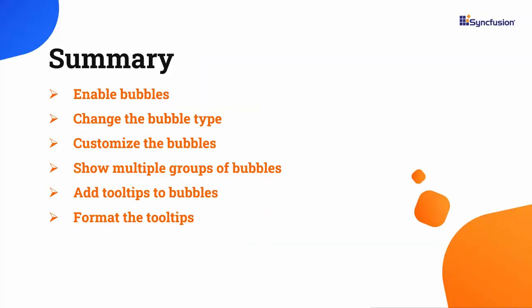Let me recap. I showed you how to add bubbles to the Angular Maps component, change the bubble type, customize the bubbles, add tooltips, and format them. You can download a working example of this from the GitHub link in the description for this video. I've also included a link where you can see if you're eligible for our community license, which will provide you with a free license key to use our products. Thank you for watching. If you found this video useful, give it a like and subscribe to our channel.